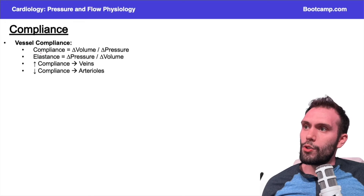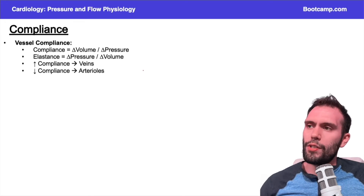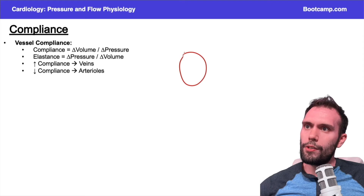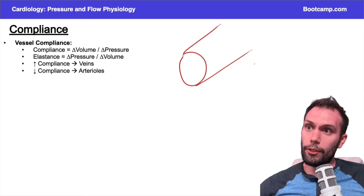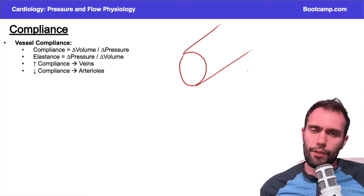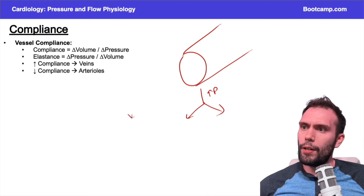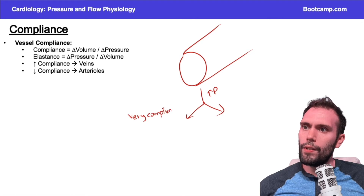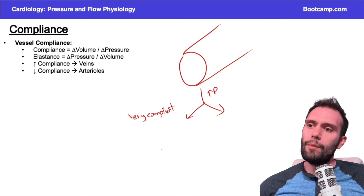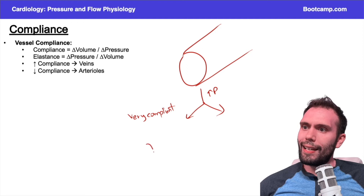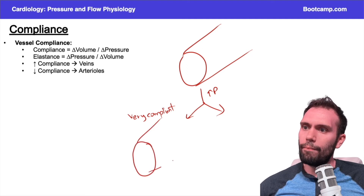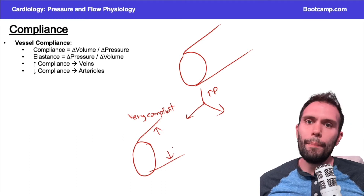So let's start with compliance. This is a concept that's kind of confusing, but if you think about it intuitively, it actually makes it a little bit easier. Let's say it's a vein, or just some vessel — it's arbitrary. If I increase the pressure in this vessel and I had a very compliant structure, it's willing to meet the demands of this pressure — it can accommodate that pressure by dilating. A very compliant vessel can accommodate changes in pressure by dilating.